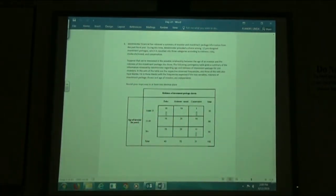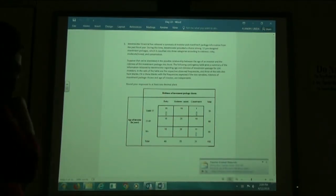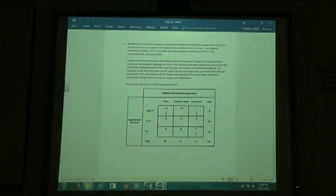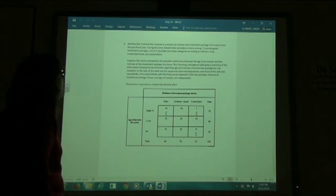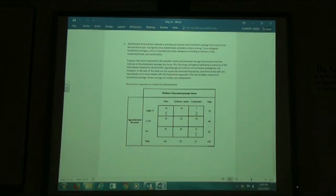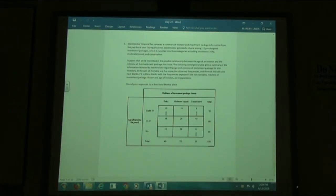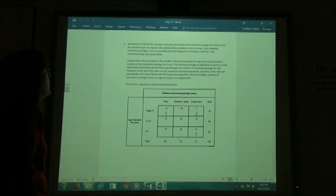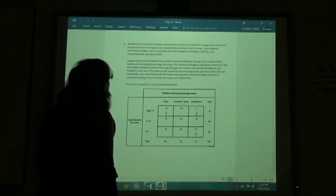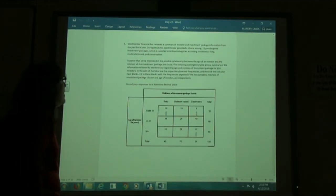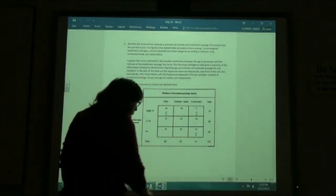So on number three, doing the same thing. Westminster Financial has released a summary of investor and investment packaging information from the past fiscal year. During this time, Westminster provided a choice among 12 pre-designed investment packages, which are classified into three categories according to riskiness: risky, moderate or mixed, and conservative. Suppose we're interested in the possible relationship between the age of an investor and the riskiness of the investment package she chooses. Fill in the blanks with the frequencies expected if the two variables, riskiness of investment package chosen and age of the investor, are independent.